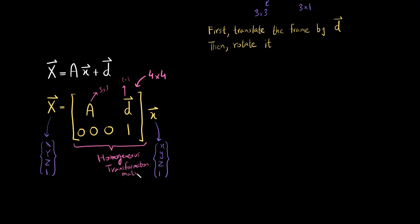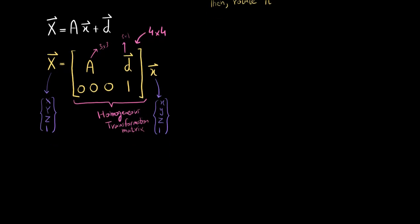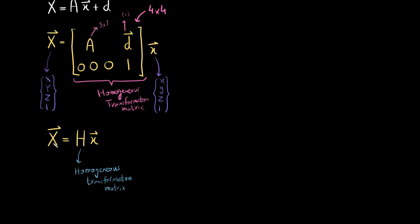What a homogeneous transformation matrix does is enable us to do coordinate transformations — that is all it does. In short form: X equals H times small x, where H is the homogeneous transformation matrix. Small x is the x, y, z coordinates in the moving frame followed by a 1, and big X is the x, y, z coordinates in the fixed frame followed by a 1. The 1 is always going to be there because of how we constructed the matrix — we had to add one extra row to make it 4×4. If you multiply it out, you get the same original equation.